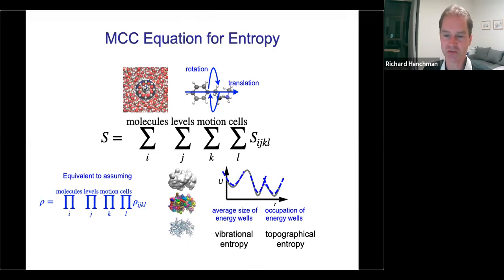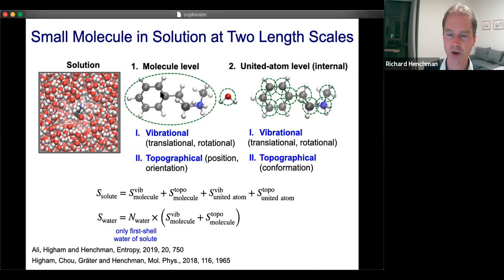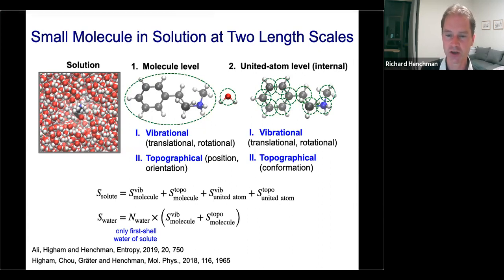Here we use two length scales for a molecule in solution — the molecule length scale and the united atom length scale, where each heavy atom with its connected hydrogens is treated as a rigid body. The idea of this theory is treating the system as a composition of multiple length scale rigid bodies. We have vibrational entropy, translation, and rotation for each length scale, plus the topographical entropy. At the united atom level it's conformational entropy; at the molecular level we talk about position or orientation of the whole molecule.